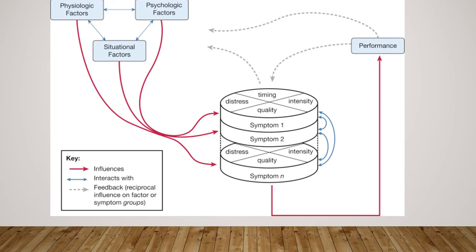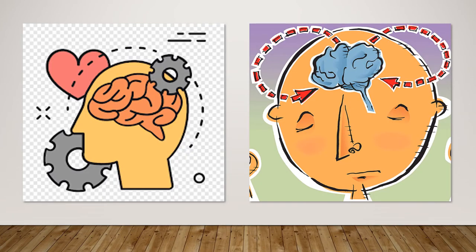The theory demonstrates that nurses should focus on multiple rather than individual symptoms. The theory does not include explicit interventions. Instead, it is assumed that many of the components and relationships in TOUS can be targeted for intervention.